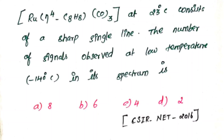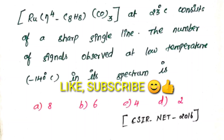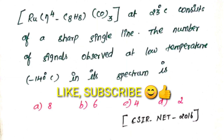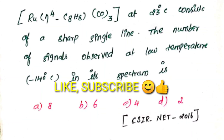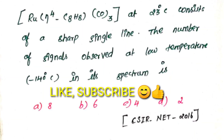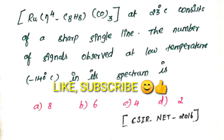In Organometallic Chemistry in our classes, if you have 5 parts, you will get the questions in the Organometallic Part 2. In the second part of the class, you will get the previous year question.